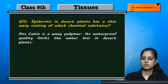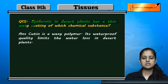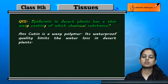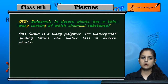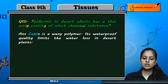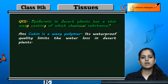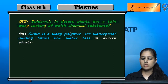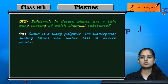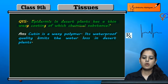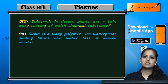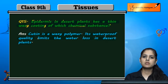Question 15: The epidermis in desert plants has a thin waxy coating. The chemical substance responsible is cutin, which is a waxy polymer. Its waterproof quality limits water loss in desert plants, which is important because there is very little water available in desert areas.